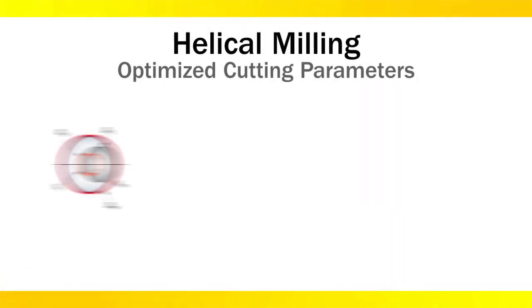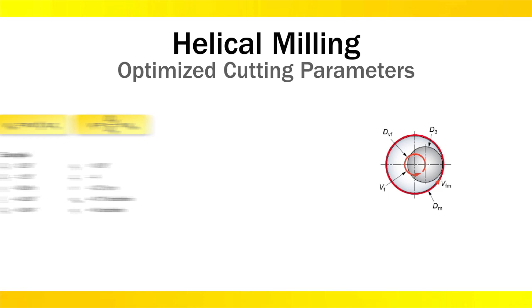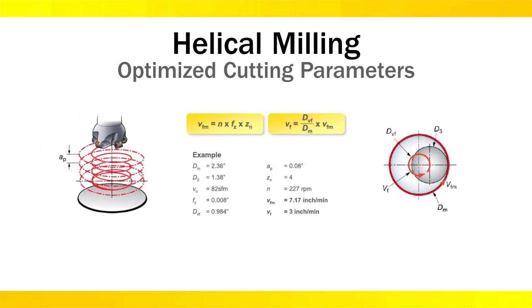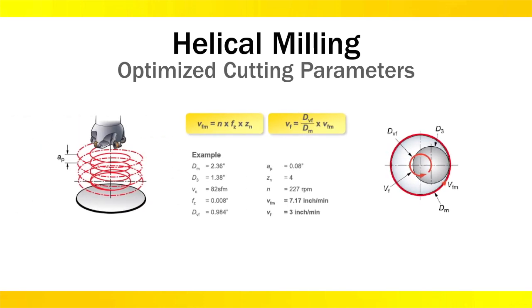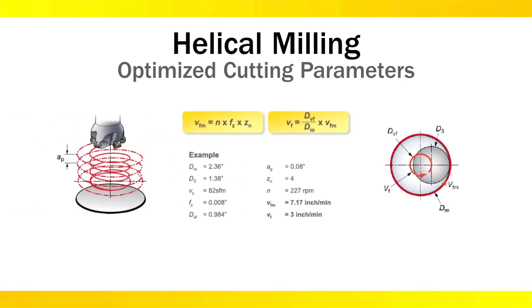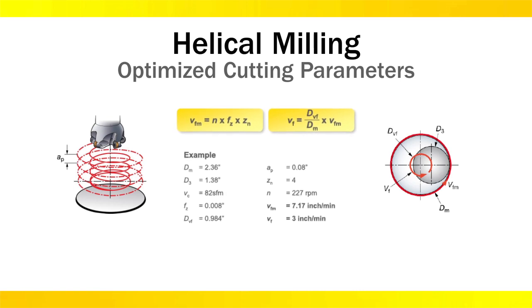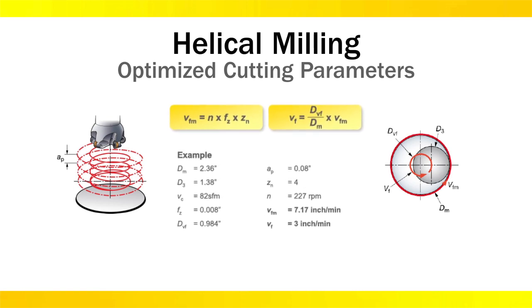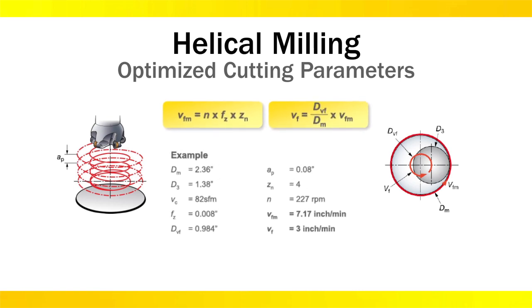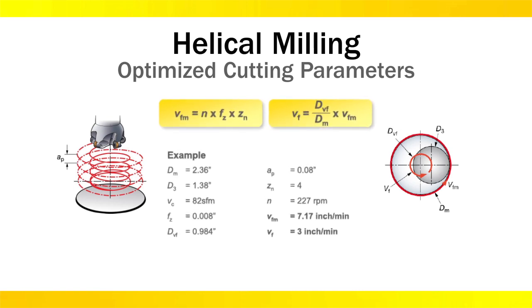Optimize the metal removal rate by leveraging the MAX app, or maximum change in Z-axis per revolution, pitch, and feeds and speeds for the greatest productivity.